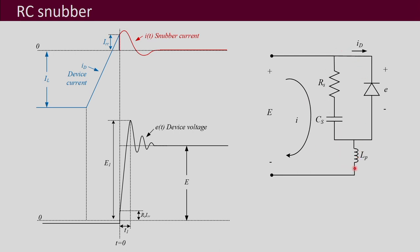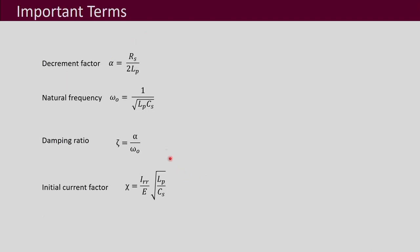To recall, this was the circuit we were using — this is your RC snubber, this is the parasitic inductance, and these were the basic waveforms used for the derivation. The important terms were: alpha, which is the ratio of RS by 2LP; omega_0, the natural frequency; damping ratio zeta, which is alpha by omega_0; and the initial current factor chi, which equals IRR by E times the square root of LP over CS.